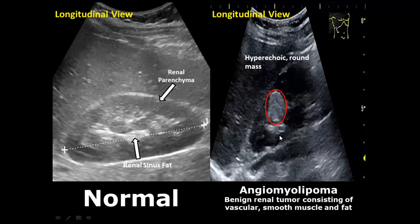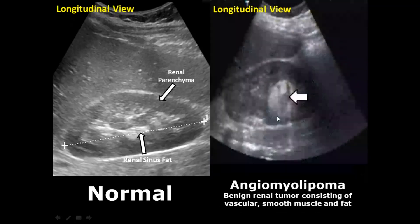Angiomyolipoma is a benign renal tumor which consists of vascular, smooth muscle, and fat tissues. It is usually a round mass which is somewhat hyperechoic. In another longitudinal view of the kidney, we can see the rounded hyperechoic mass in the lower pole of the kidney.